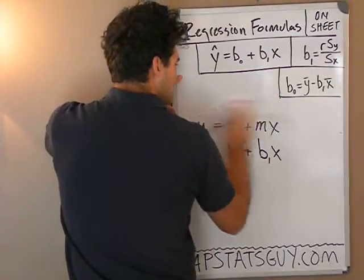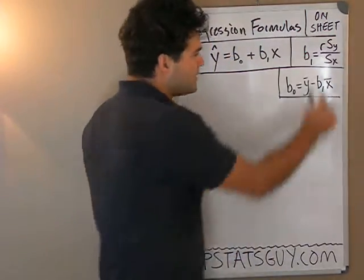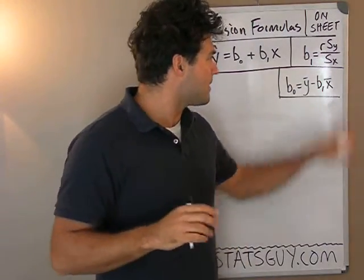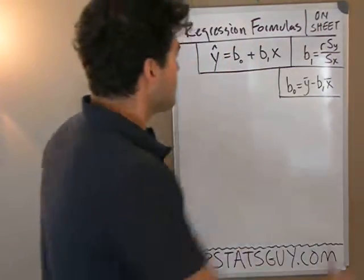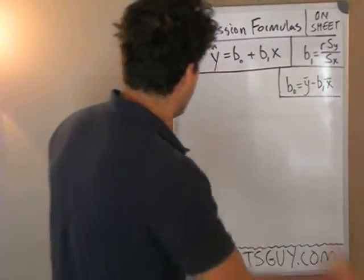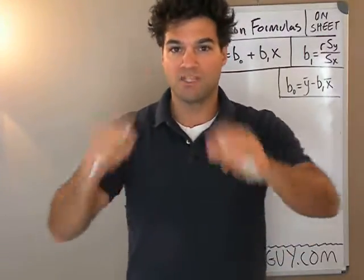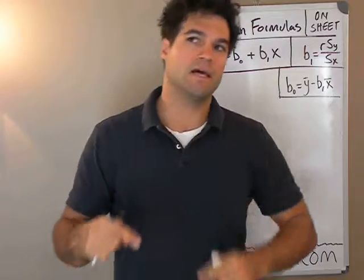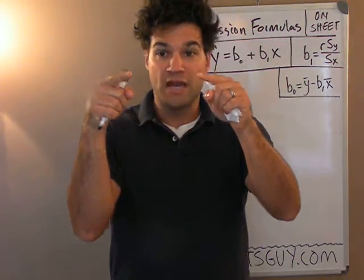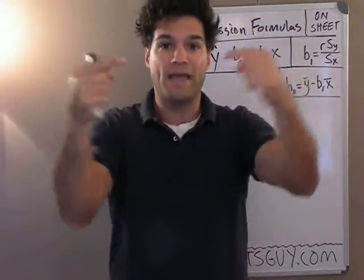So that equation is y equals intercept plus slope times x. Next: the formula for slope. The slope of the line is simply r times the standard deviation of y over the standard deviation of x. When you're doing regression you have a bunch of ordered pairs — a bunch of x, y values tied together — like diameter of a tree trunk paired with height of that tree trunk. They're pairs, they go together.